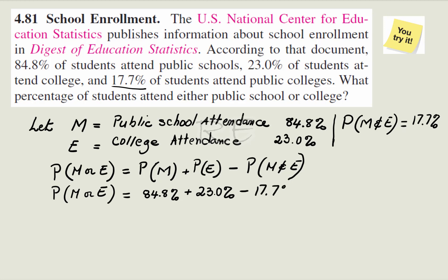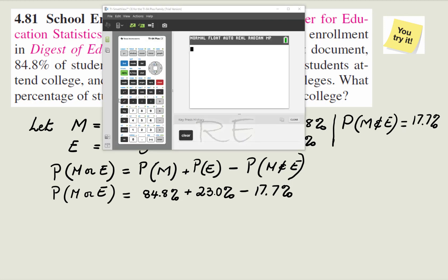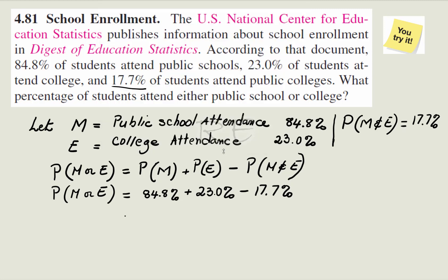We'll do it quickly with our calculator. 84.8% plus 23.0% minus 17.7%. And our answer is 90.1%. That's it.